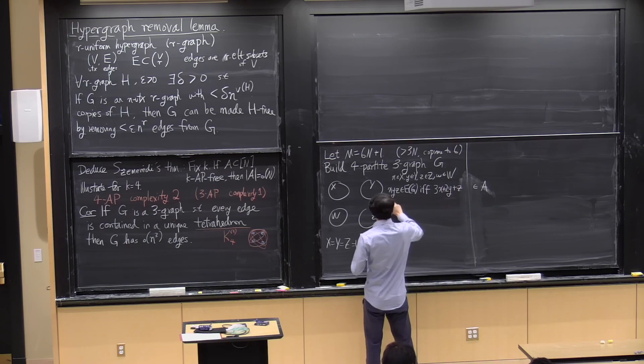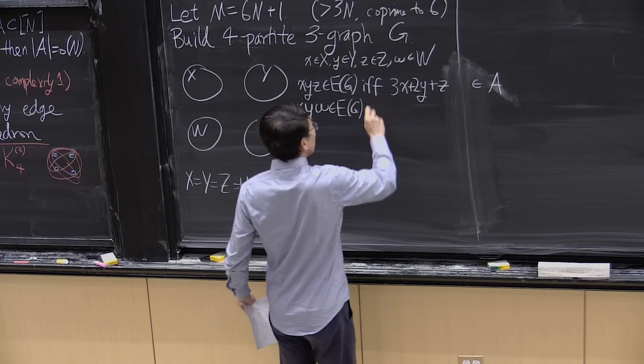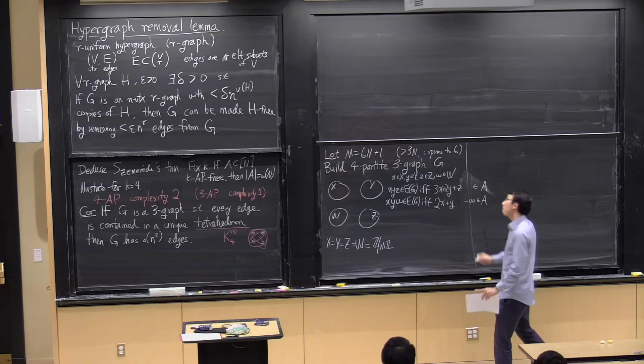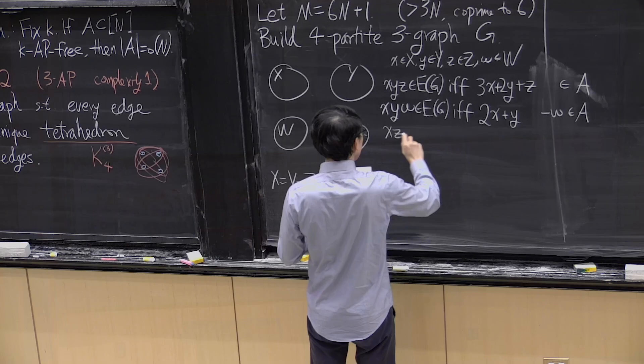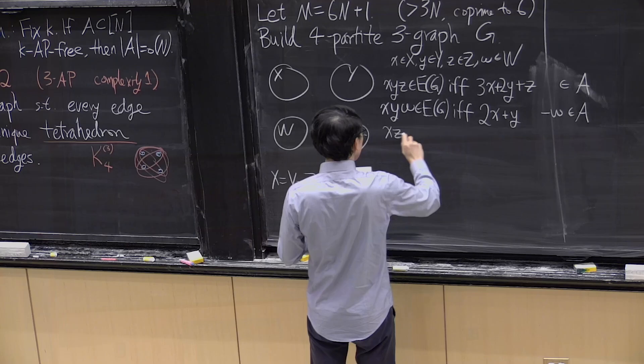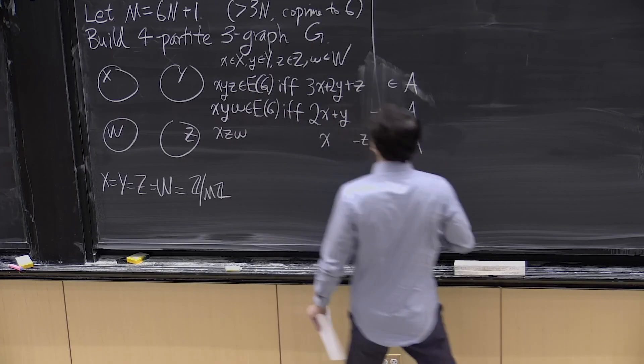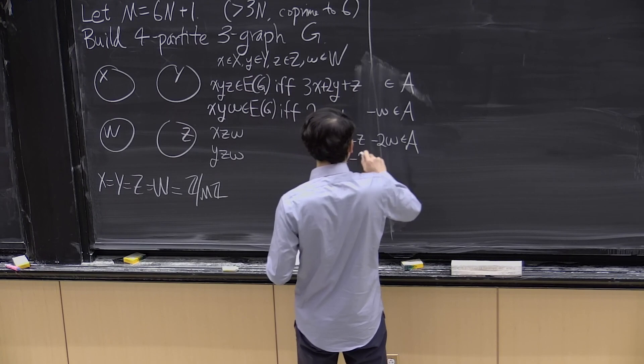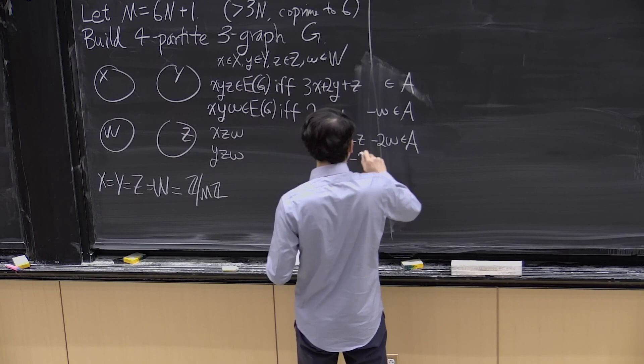Here are the rules for putting in edges. We include the edge (x,y,z) if and only if 3x+2y+z lies in A. We include (x,y,w) if and only if 2x+y−w lies in A. We include (x,z,w) if and only if x−z−2w lies in A. And we include (y,z,w) if and only if −y−2z−3w lies in A. These are the rules for the edges of this hypergraph.